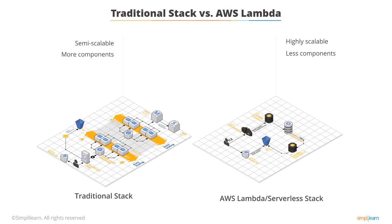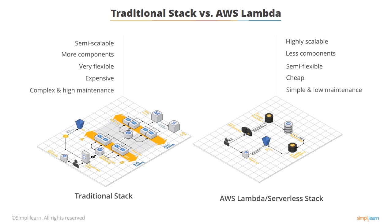The benefit of the traditional stack is its flexibility — because you are in control of the stack, you can build it the way you want and are not limited to AWS's view. Of course, this comes at a cost of time and will also cost more to run. On the flip side, AWS Lambda or serverless stacks are very simple, as much of the complexity of managing and maintaining the underlying infrastructure is AWS's responsibility. This approach does have downsides, one of which is that you are currently limited to only three languages.